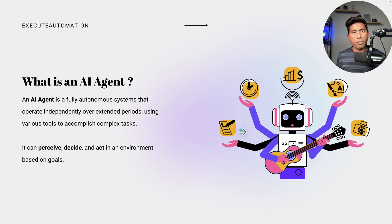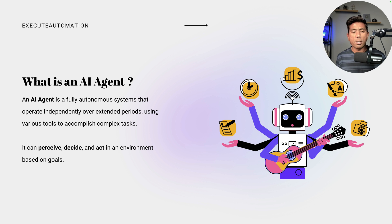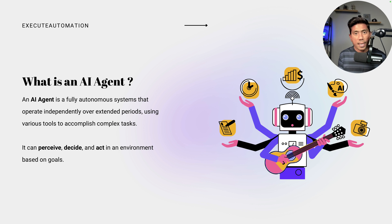We have already discussed AI agents on our Excel Automation YouTube channel — what exactly an AI agent is. An AI agent is a fully autonomous system that operates independently over an extended period, using various tools to accomplish complex tasks. It can perceive, decide, and act on an environment based on given goals. That's what an AI agent is.